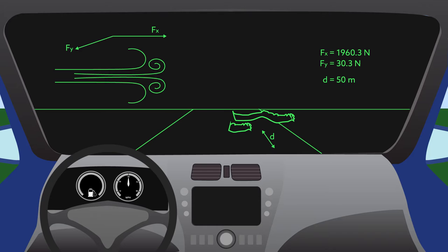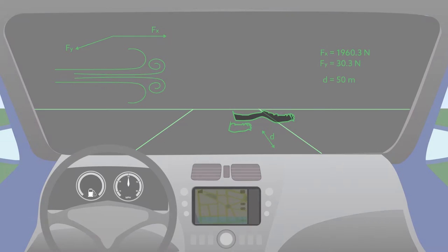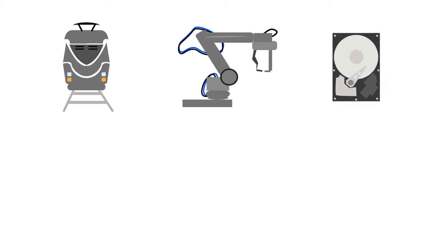Disturbance observers are not new to the world of automation. For decades, these algorithms have played an important role in controlling railways, robots, and hard drives.